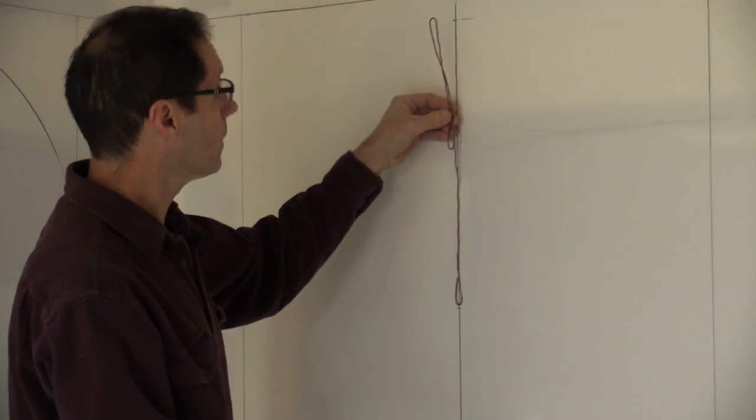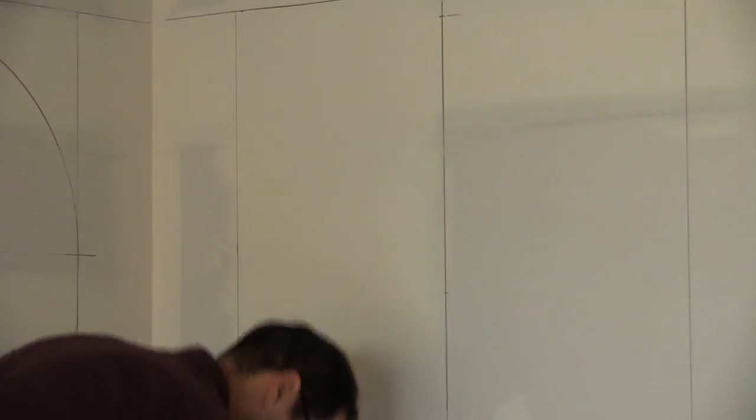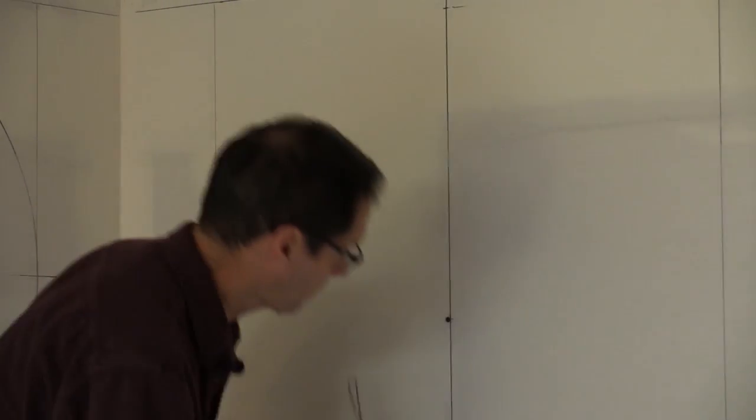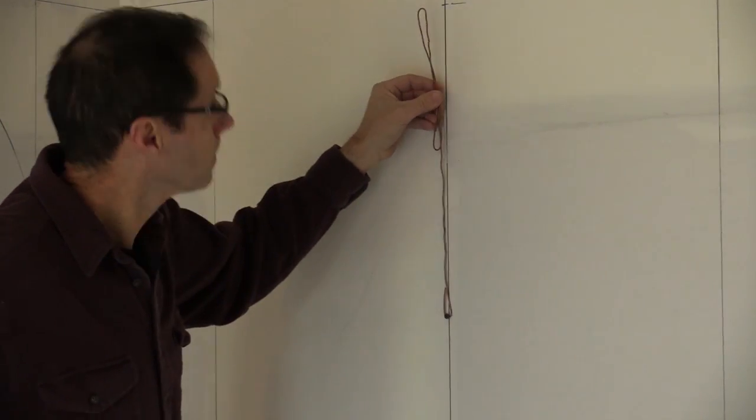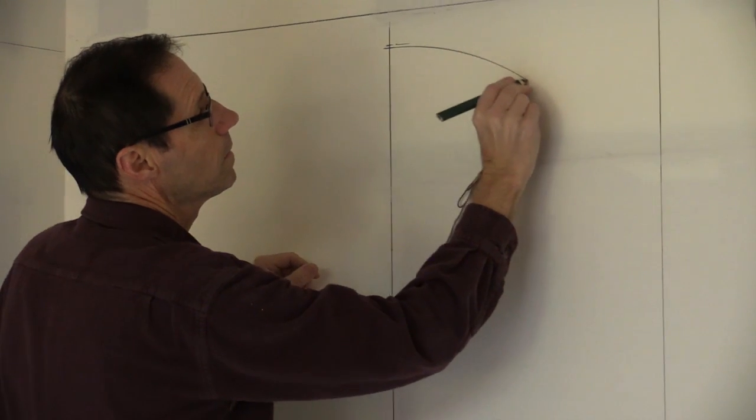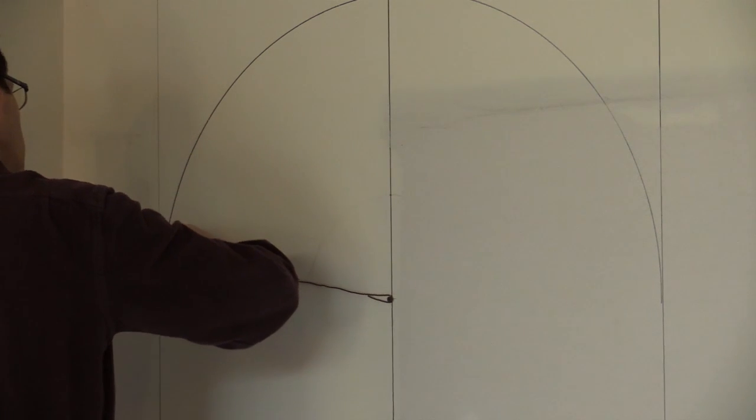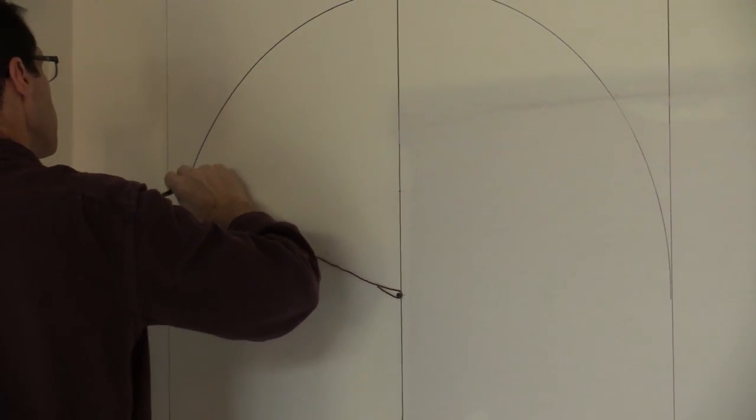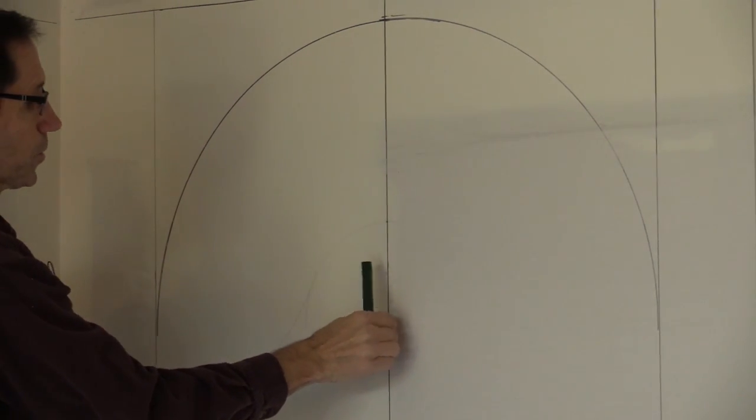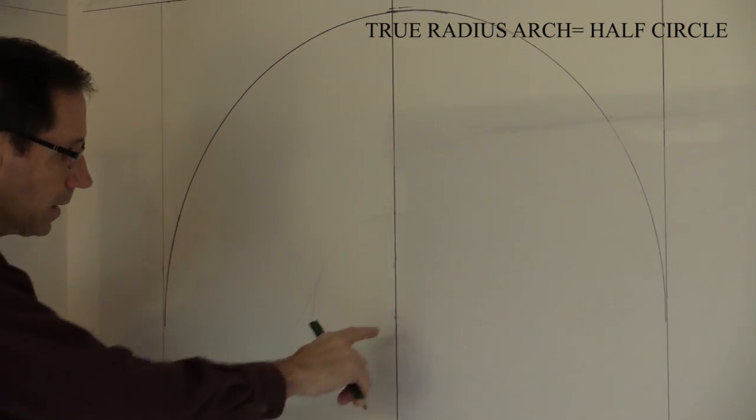And there you have a true radius arch. It's actually a half circle arch. I'm just going to level this height across so we can look at where the spring line is on this arch.